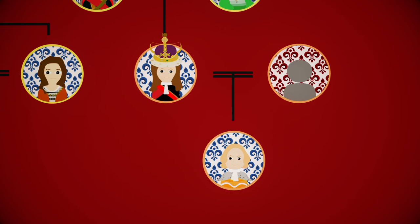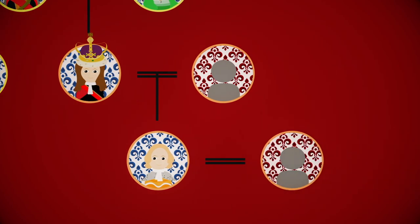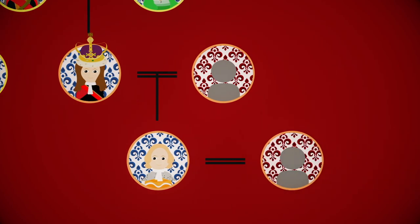In 1705, George's son George married Carolyn of Ansbach. When George's father George became king in 1714, he became Prince of Wales, and when he died, George became king and reigned until his death in 1760.